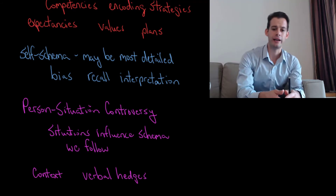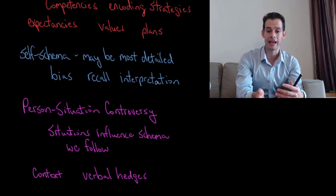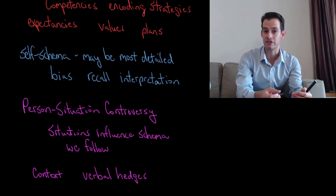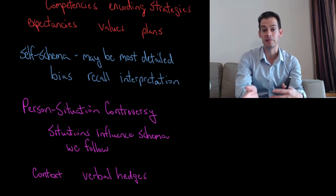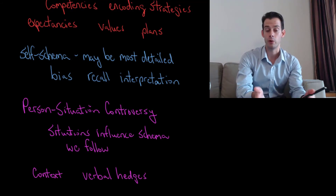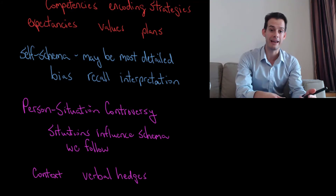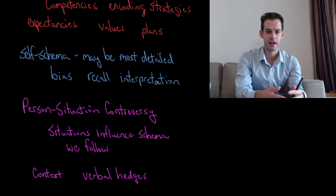If we have these schema and they are influenced by the situations we're in, and they influence our behavior in those situations, it can be hard to tell what the actual cause of a behavior is. Is it resulting from something about that person's personality, or is it resulting from the fact that they're in a particular situation? This is called the person-situation controversy, because we recognize situations influence our schema, those schema influence our behavior, and that's going to influence what we might consider to be the expression of our personality.